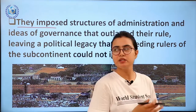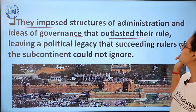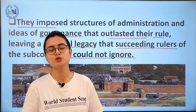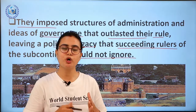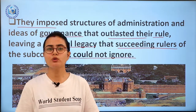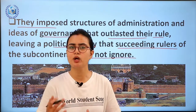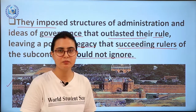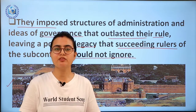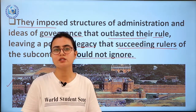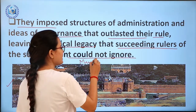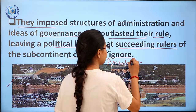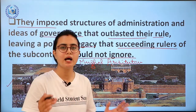From the later half of the 16th century, they expanded their kingdom from Agra and Delhi, until in the 17th century they controlled nearly all of the subcontinent. They imposed structures of administration and ideas of governance that outlasted their rule, leaving a political legacy that succeeding rulers could not ignore. For example, the Red Fort in Delhi — an architectural marvel built in Shah Jahan's time — where our PM hoists the flag every 15th August. It is an example of Mughal architecture.